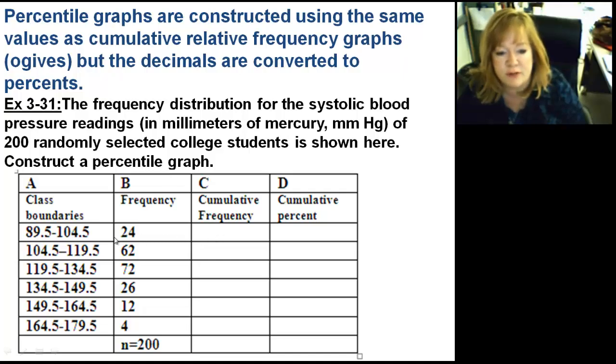Frequency, if you remember, when you start out, it's the cumulative. So I start out with a 24 there, and then I add 62 to it. So I add 62, and then 24 plus 62 is 86. Then I do 86 plus 72 to get 158, and so on. Those are our cumulative frequencies.